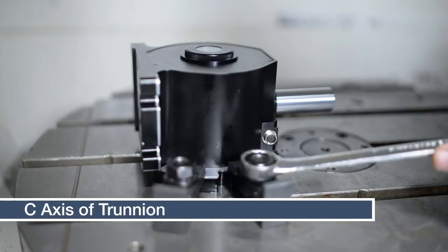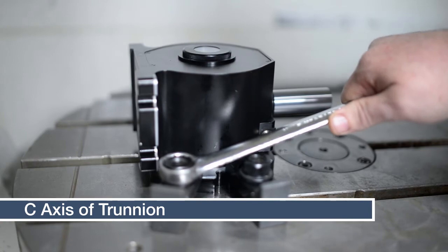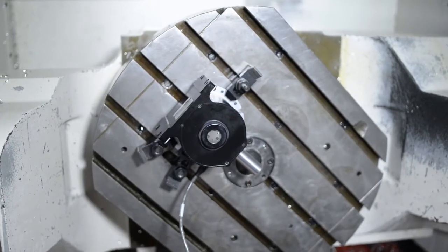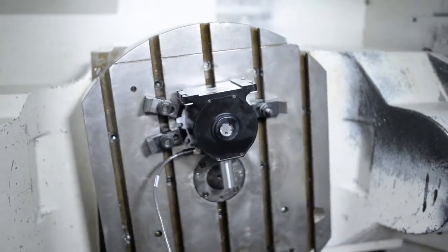To measure the C axis of a trunnion, mount the swivel via the flange securely on the bed. Once you connect all your devices, you're ready to run your program.